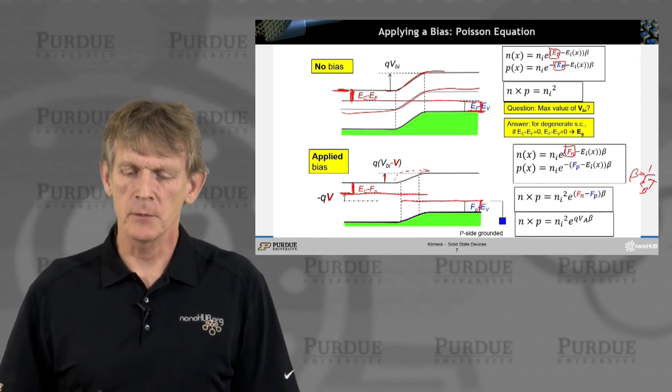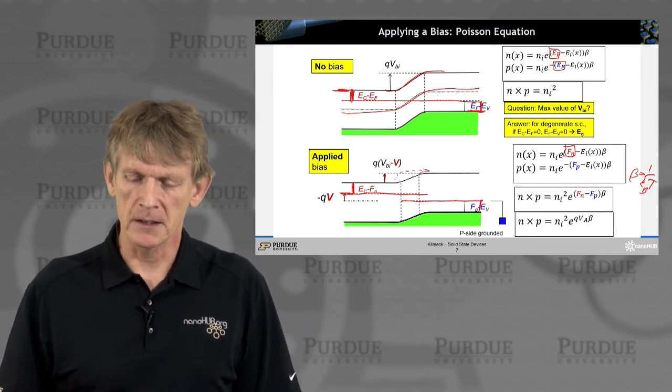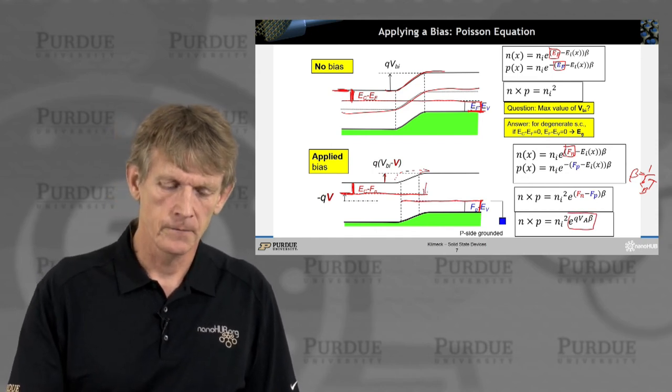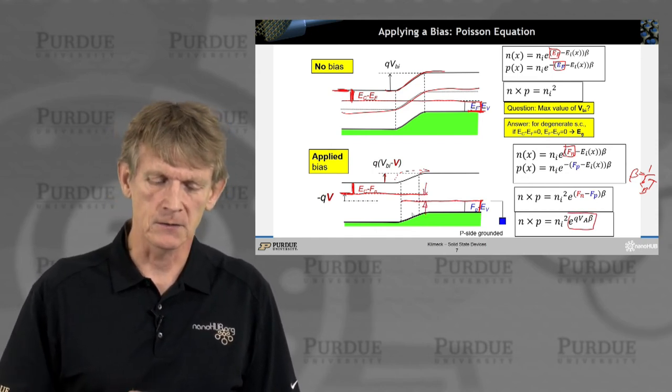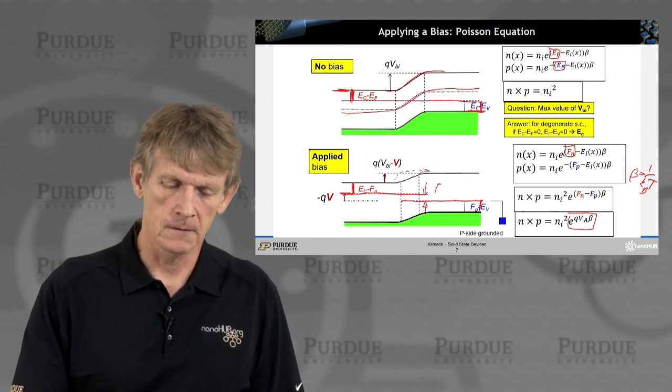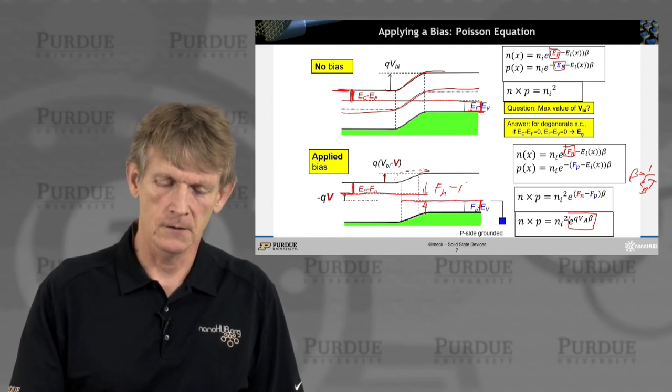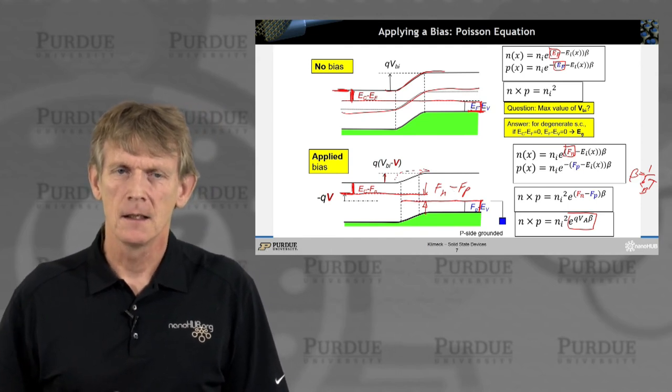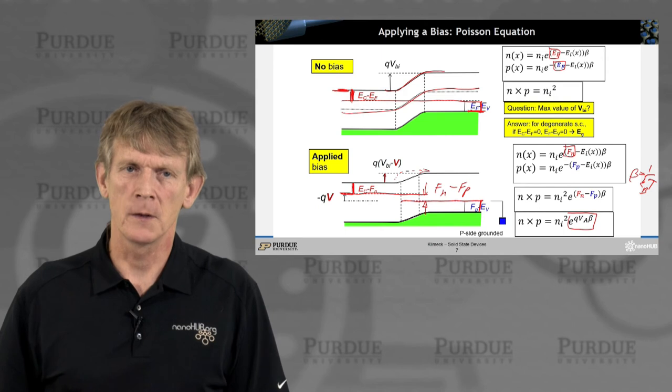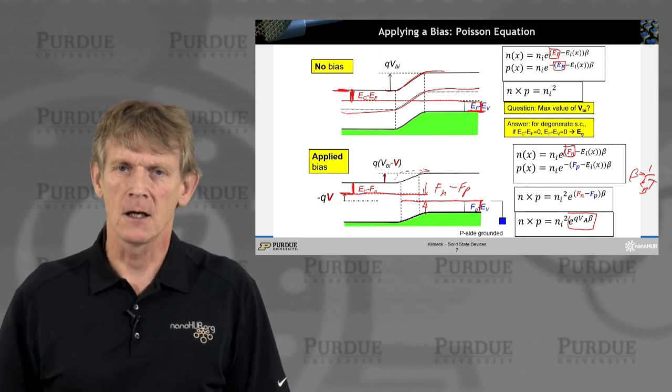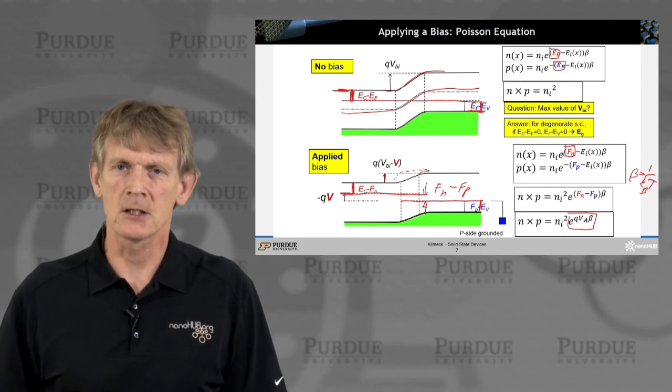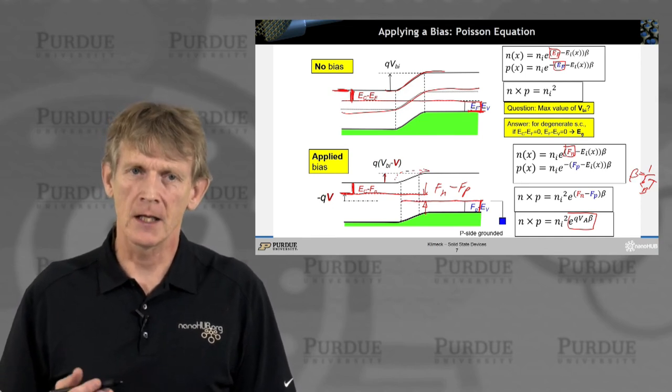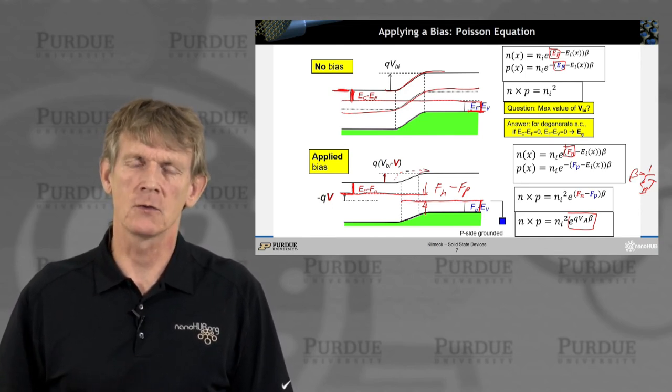Now, that means the exponential includes really the applied bias. That is the difference here of the applied bias, which is Fn minus Fp. So, the product of N and P now is growing exponentially with the applied bias. That will be a very important feature to walk away from.